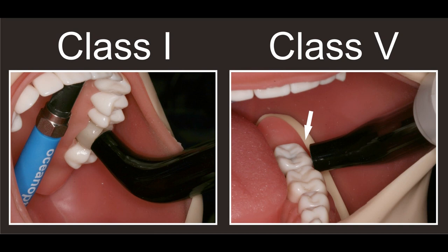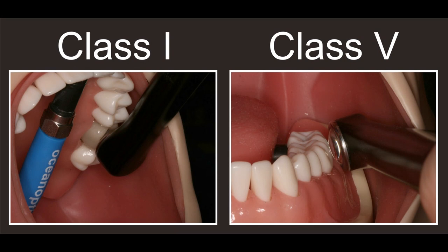Here we can see an example of a curing light with a light guide. Note how difficult it is to get into the Class I and Class V locations. This shows how relatively easy it was to get another curing light into those same locations. Even so, the 20 operators using this particular curing light for the same amount of curing time delivered between 4.4 and 17.4 joules per centimeter squared.